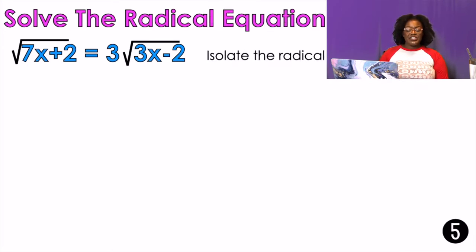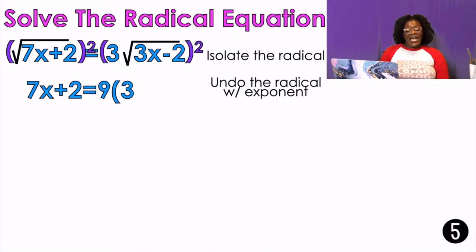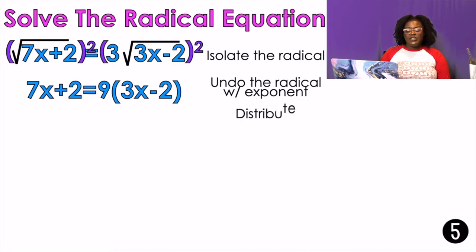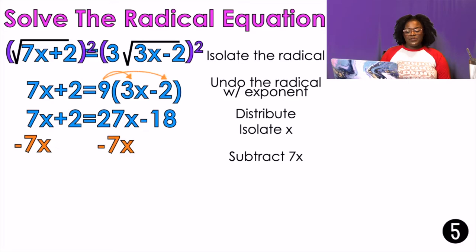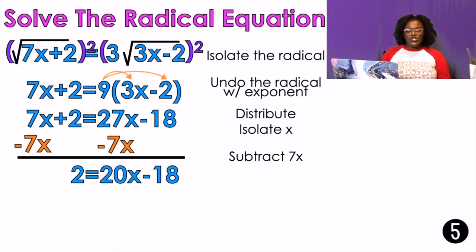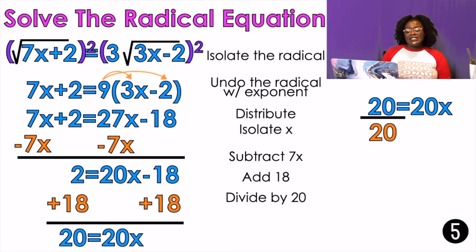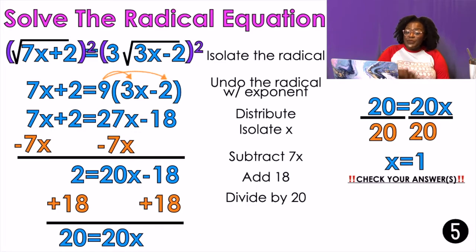Again, I have radicals on both sides of the equation — I can't isolate, so I undo by using an exponent first. I get 7x plus 2 equals 9 times the quantity 3x minus 2, because 3 squared is 9. I distribute that 9 into the parentheses to get 27x minus 18. Subtract 7x to get 2 equals 20x minus 18. Add 18 to both sides: 20 equals 20x. Divide by 20 and x equals 1. Make sure you check your answers because sometimes you will get extraneous answers.